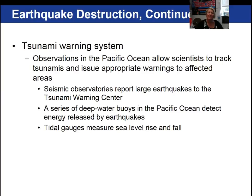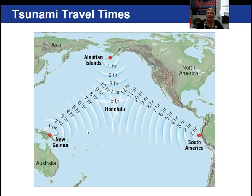There is a tsunami warning system in the Pacific Ocean that issues warnings when large earthquakes occur. It uses a series of deep-water buoys to detect energy released by earthquakes, as well as tidal gauges to measure sea level rise and fall. For example, if an earthquake occurred at the Aleutian Islands, a tsunami would take about 5 hours to reach Honolulu; from New Guinea about 10 hours; and from South America about 12 hours.